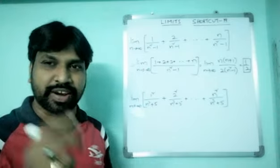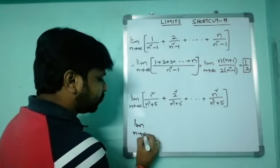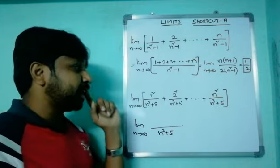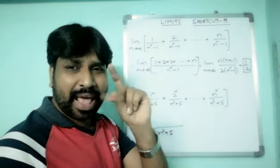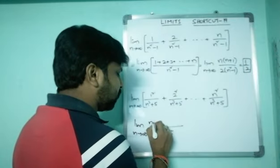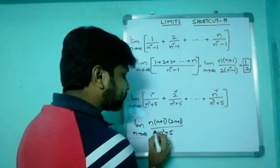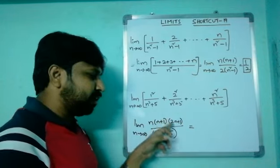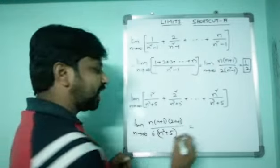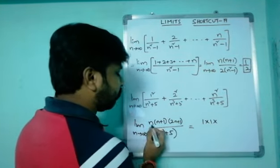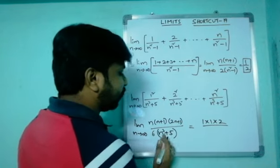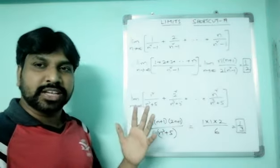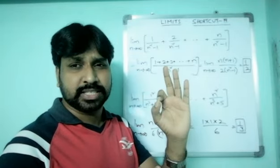For the second question: as n tends to infinity, the denominator is n³+5 repeated. Taking n³+5 as common, the numerator becomes 1² + 2² + 3² + ... + n², which is sigma n². Sigma n² equals n(n+1)(2n+1)/6. The numerator power is n³ and the denominator power is also n³, so the answer is the ratio of coefficients: 1×1×2 divided by 6 equals 1/3. There's also a beautiful shortcut for this — I'll reveal it soon.